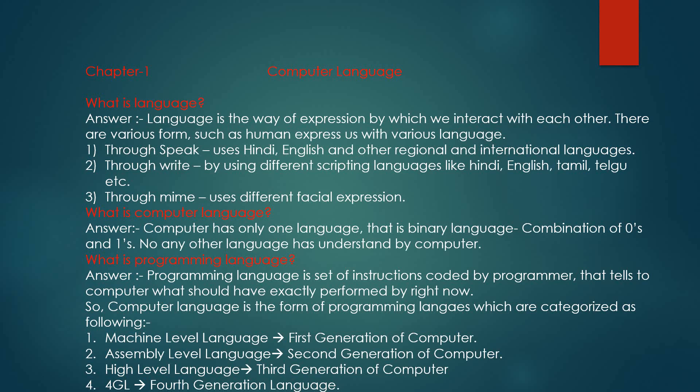We know different kinds of languages. As humans, we express ourselves in three ways: through speak, through write, and through mind. In speaking, we use different kinds of languages like Hindi, English, and other regional and international languages. In writing, we use different scripting languages — Hindi uses Devanagari, English uses Roman script, Tamil uses Tamil script, Telugu uses Telugu script, and on the international level there are Chinese, German, Russian languages, etc.